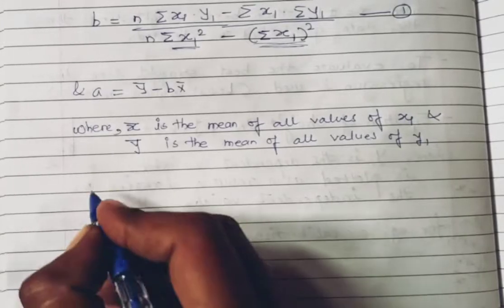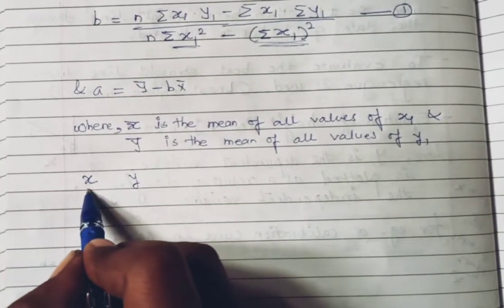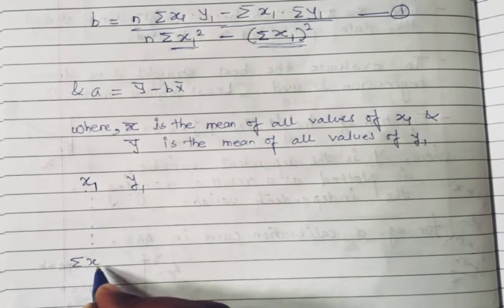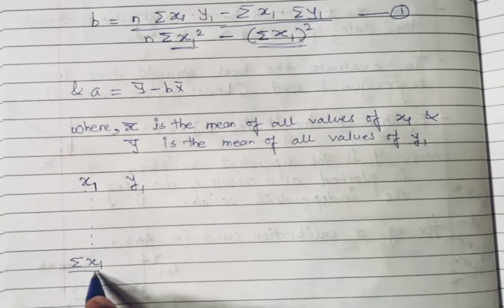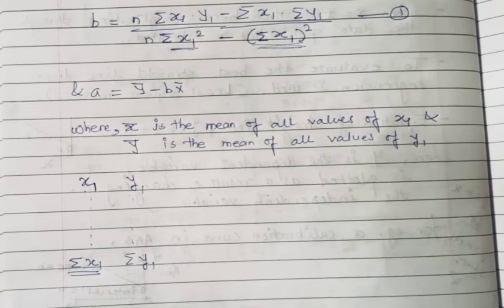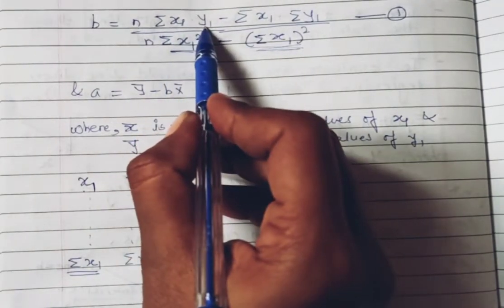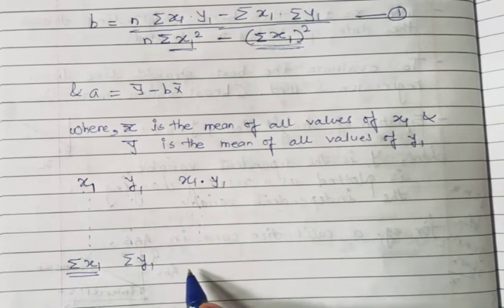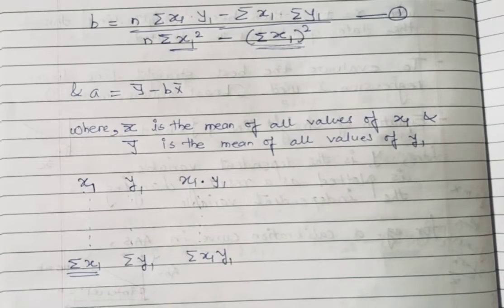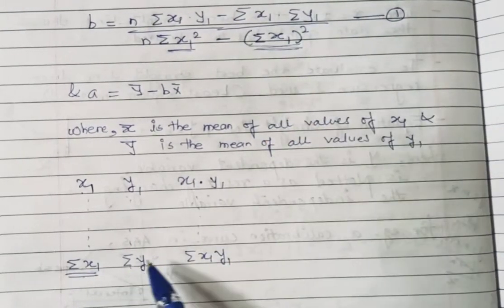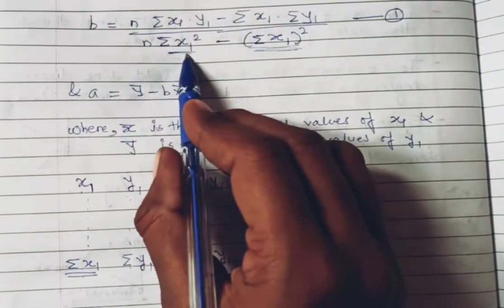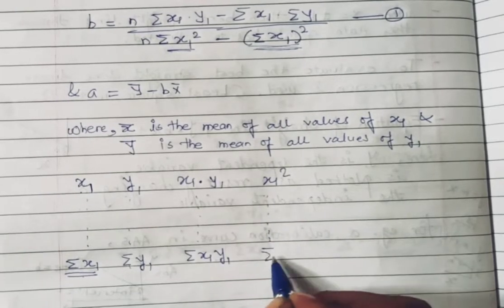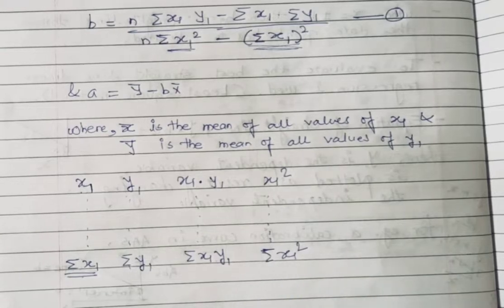Suppose in our problem x is concentration and y is absorbance. We write the x_i and y_i values in a table. Adding all x_i values gives Σx_i; adding all y_i values gives Σy_i. Then we multiply the x_i and y_i columns together to get the x_i·y_i column, and adding all those values gives Σ(x_i·y_i). Finally, squaring each x_i and summing gives Σ(x_i²). Once all values are ready, substitute into the formula to find the slope b.